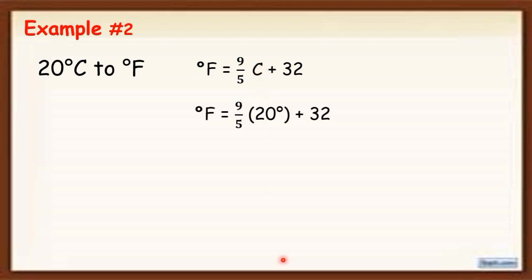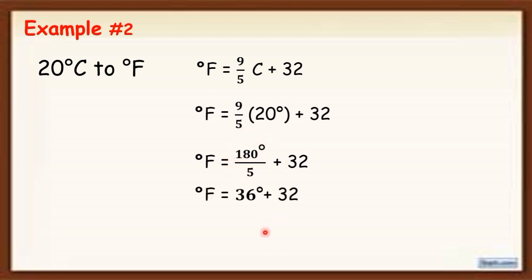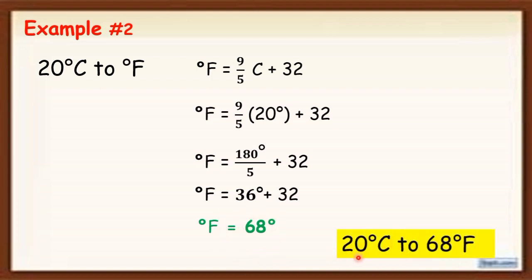We perform multiplication: 9 × 20 = 180, so we have 180/5 + 32. Bring down the 32 and simplify. 180 divided by 5 equals 36, so the final answer is 36 + 32 = 68 degrees. Therefore, 20 degrees Celsius is equal to 68 degrees Fahrenheit.